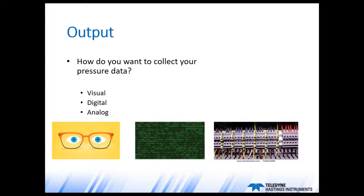How are we going to look at the output of the vacuum gauge? It really comes down to three areas: visual, where you simply look at the gauge and know the pressure; digital output, where the digital signal is connected to a central control module like a PC; and analog, where a proportional signal — either voltage or current — is connected to a PLC or DAC card. For many gauges, you don't have to select just one — there are advanced digital vacuum gauges that may offer all three: a display as well as analog and digital outputs.